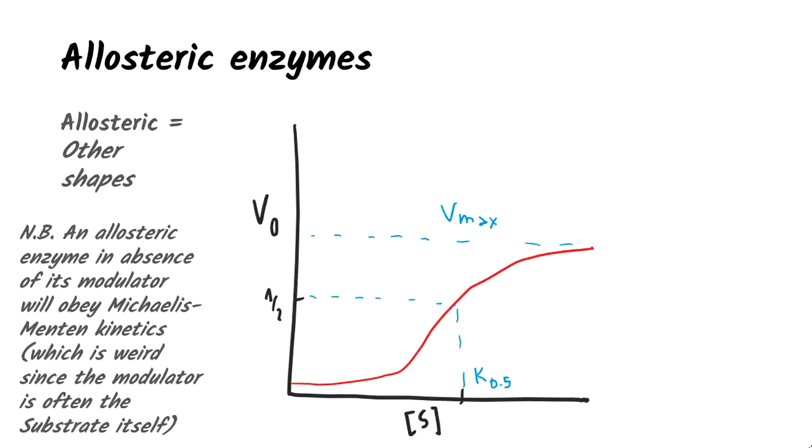In these cases, the concentration of substrate at which Vmax is reached has nothing to do with Km, and therefore it is represented with K0.5.